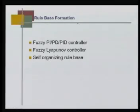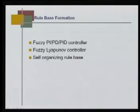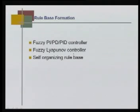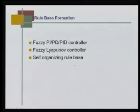The rule base formation can be done in three types: one is using the idea of PI, PD, PID controller response — the general notion of how a PID controller response looks. Another is the fuzzy Lyapunov concept, where the rule base is formed using stability notions. And thirdly, a self-organizing rule base, where all parameters of the fuzzy logic controller are generated using an optimization concept.